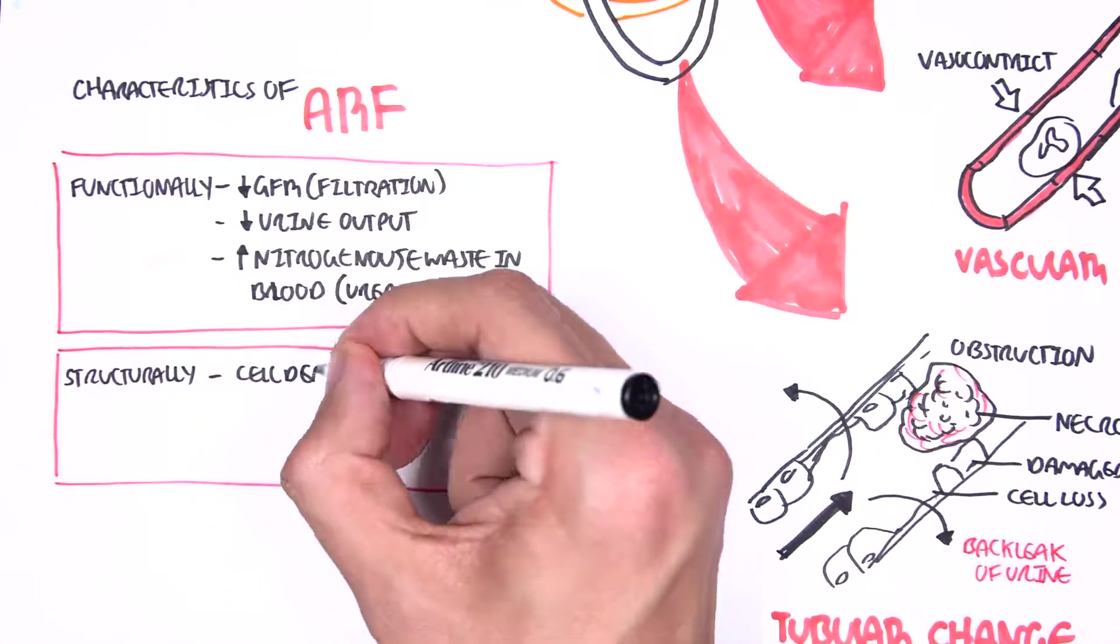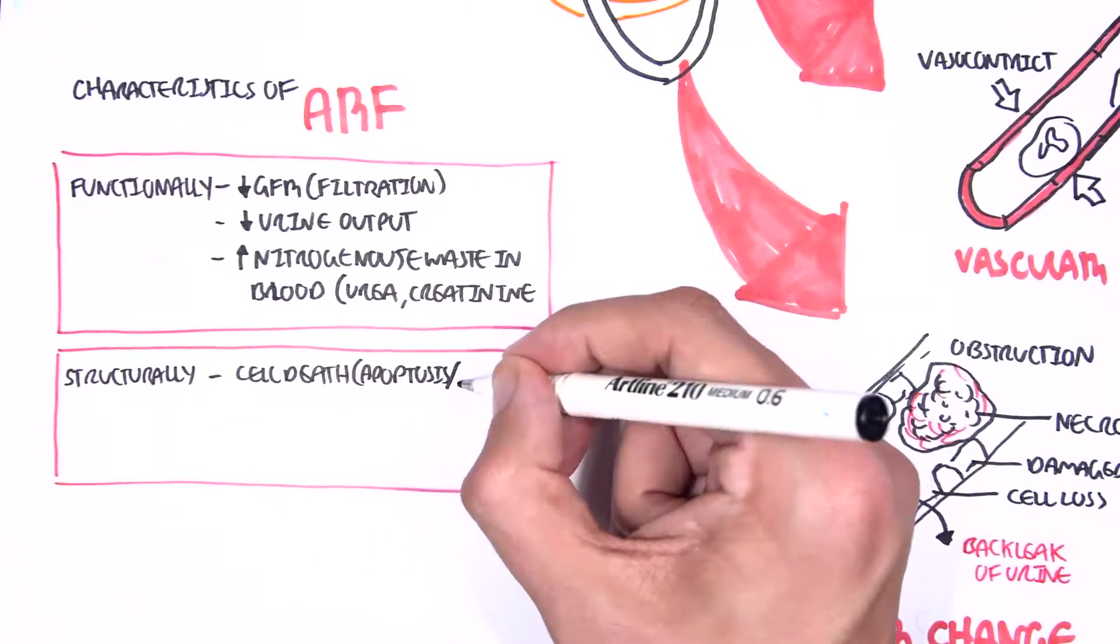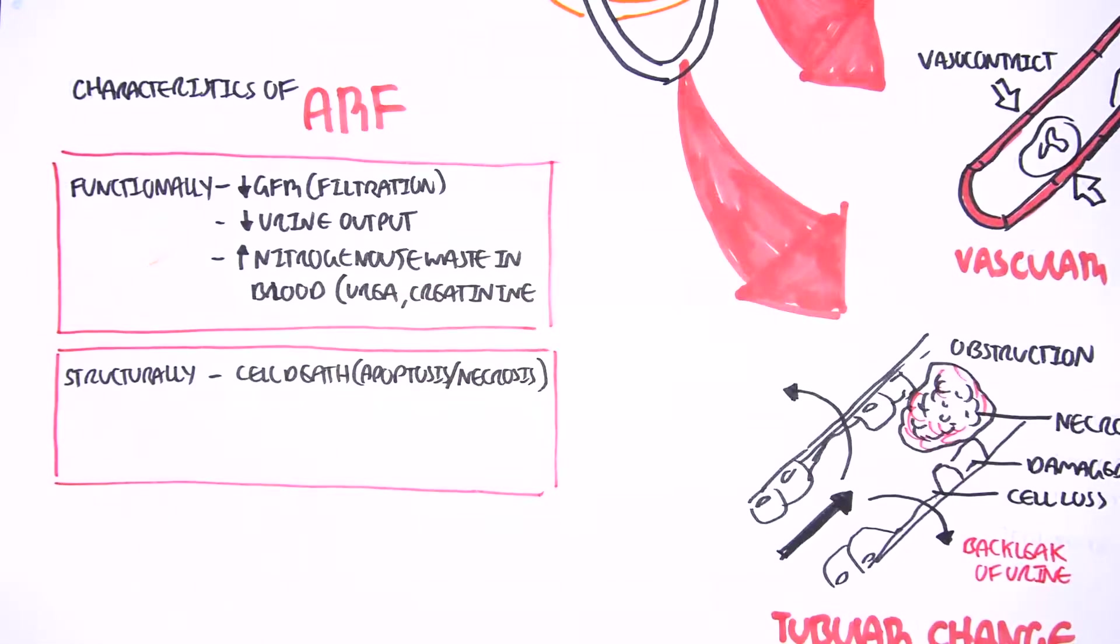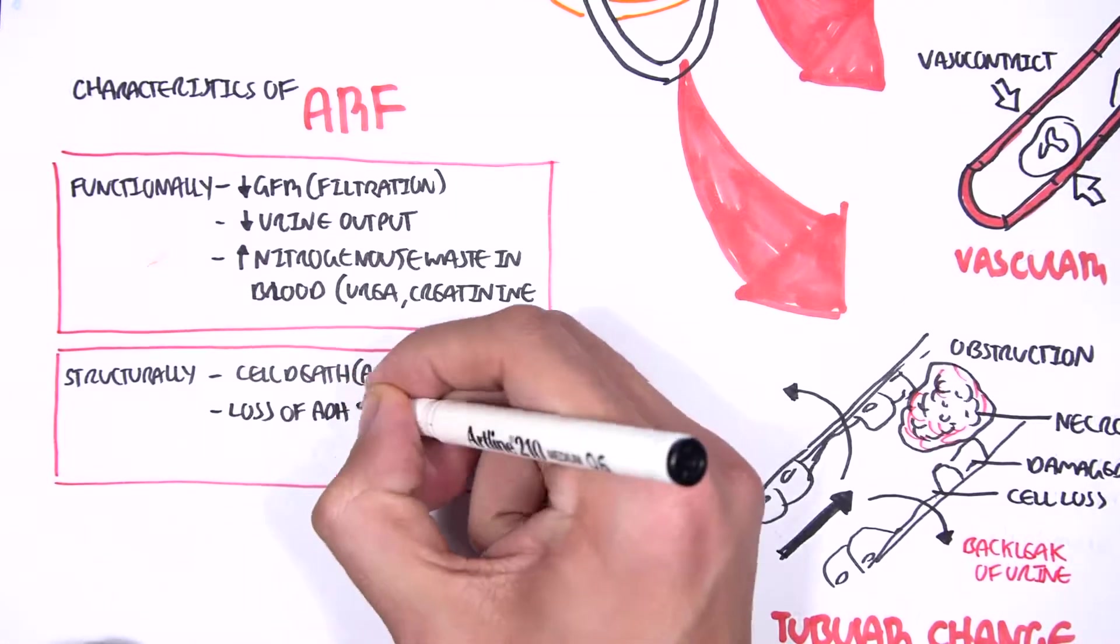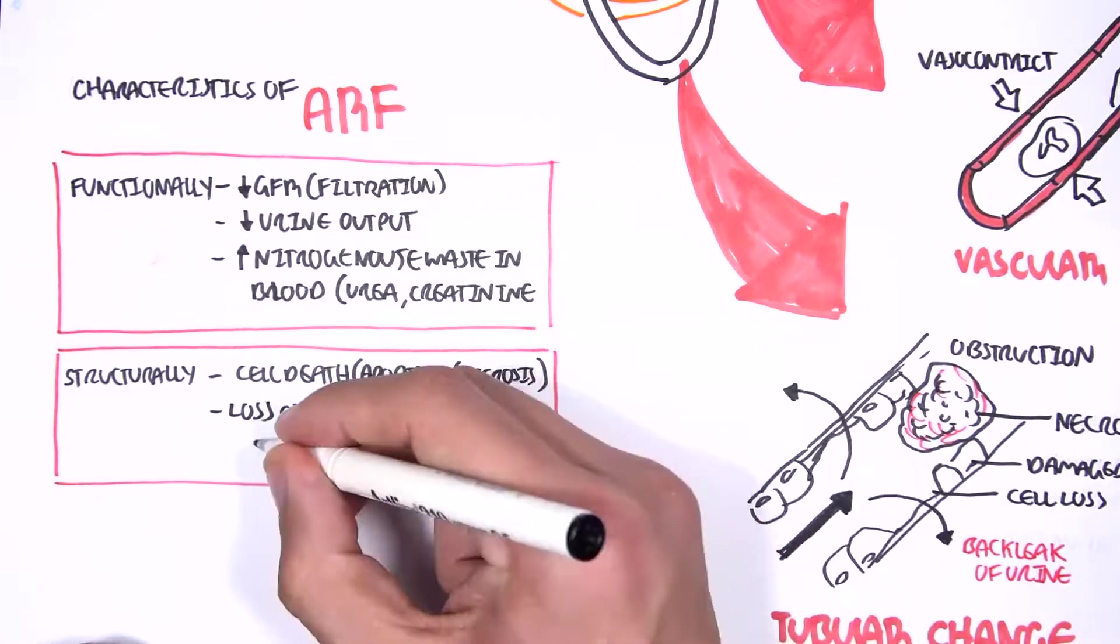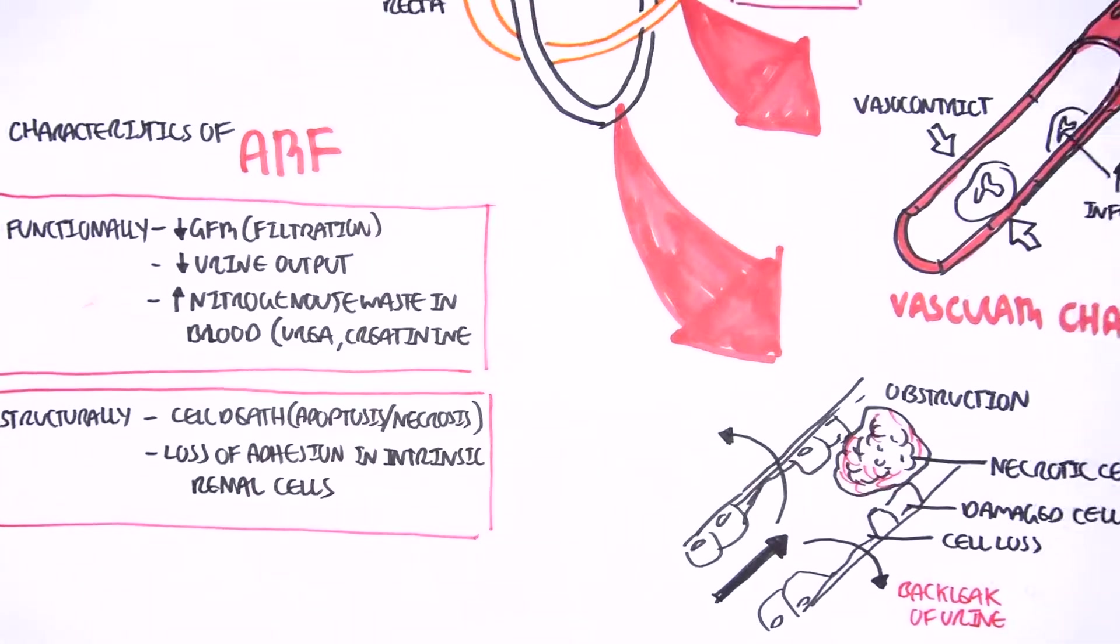Structurally, in acute renal failure we have cell death due to apoptosis or necrosis, as well as loss of adhesion to intrinsic renal cells. This will lead to obstruction and complications like that.